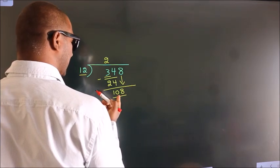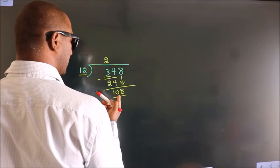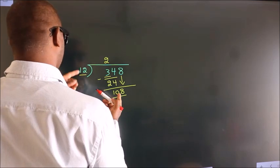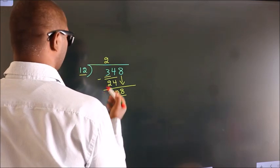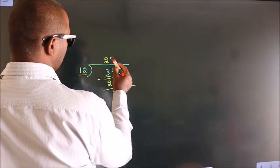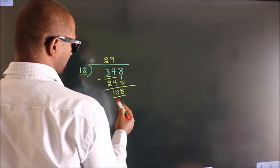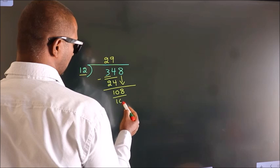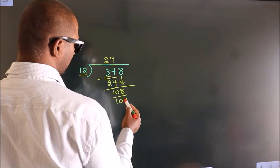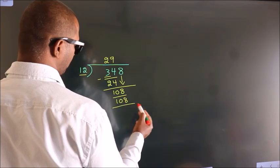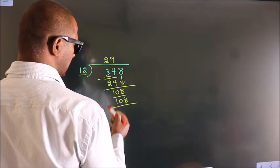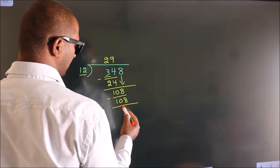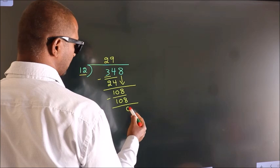When do we get 108 in the 12 times table? 12 nines is 108. Now we subtract. We get 0.